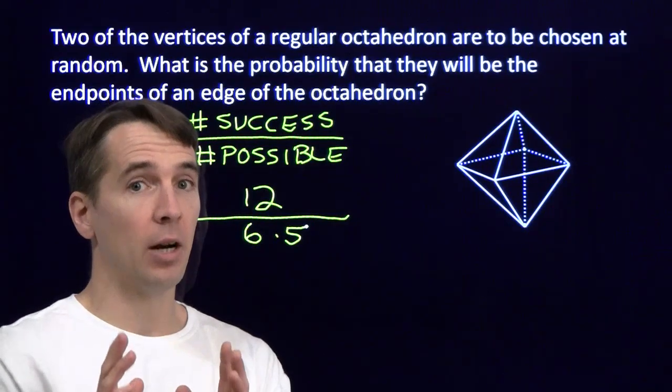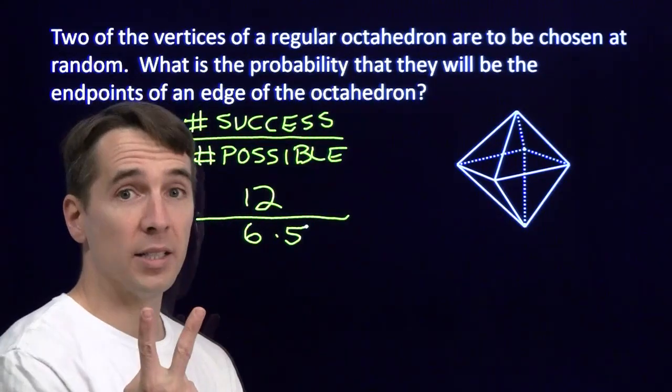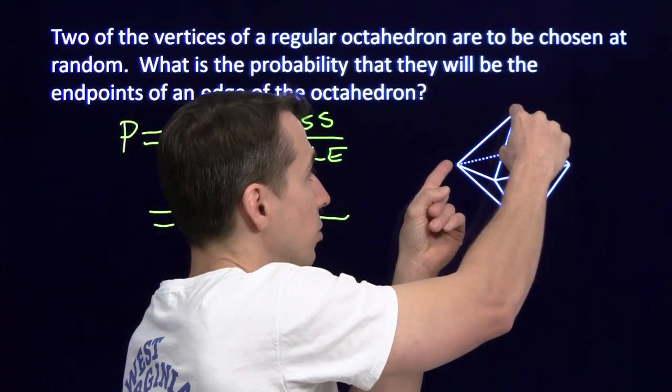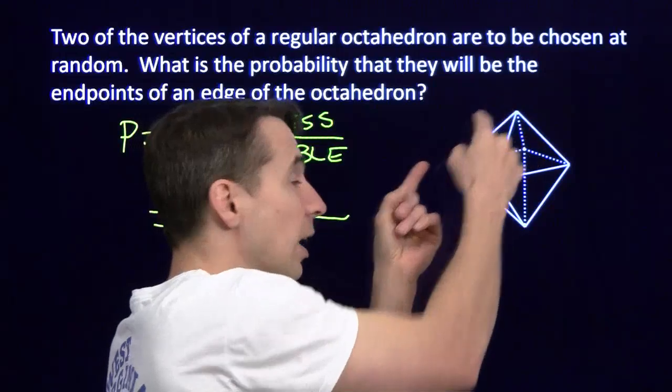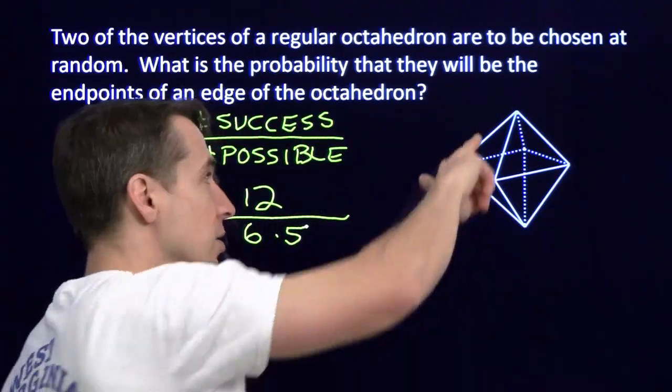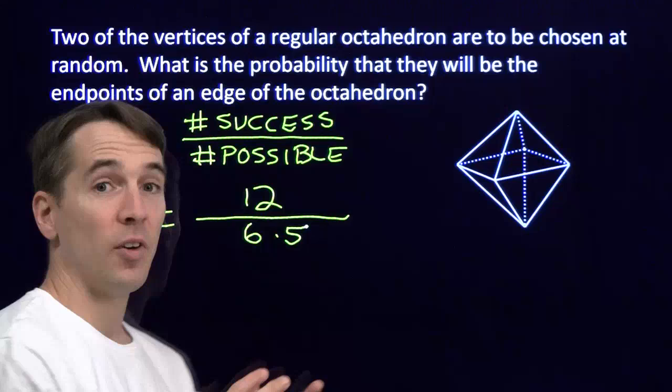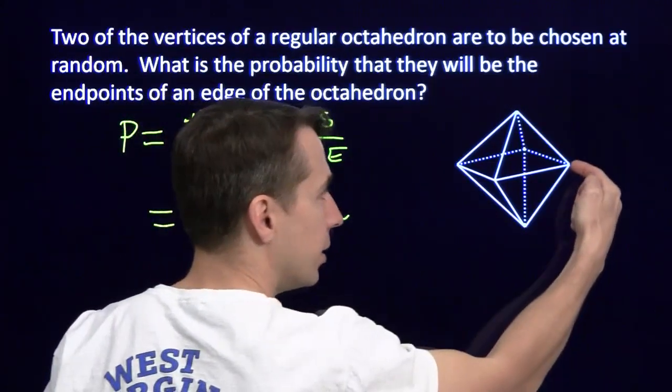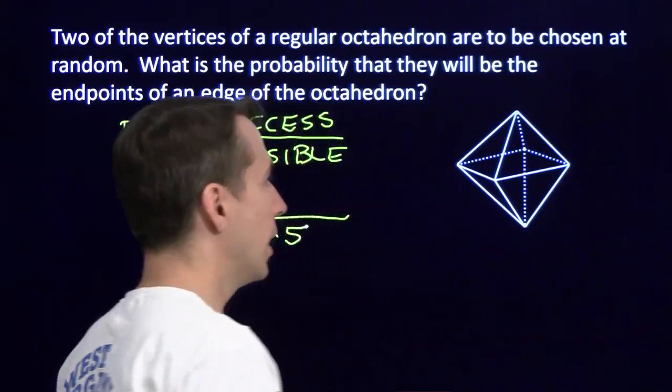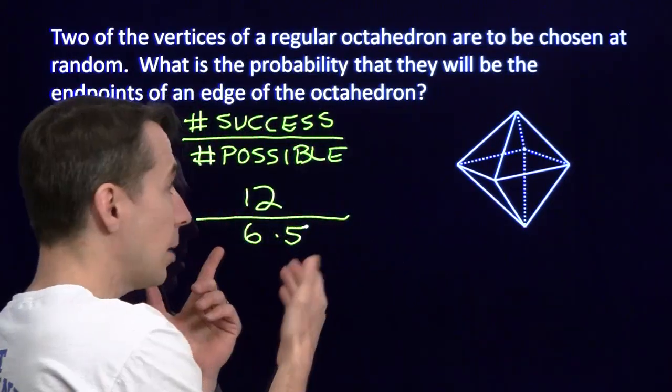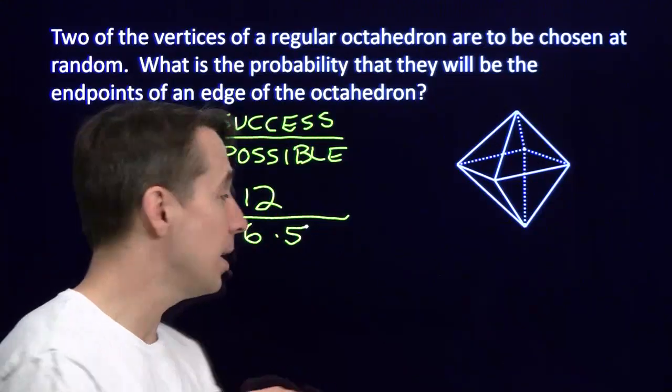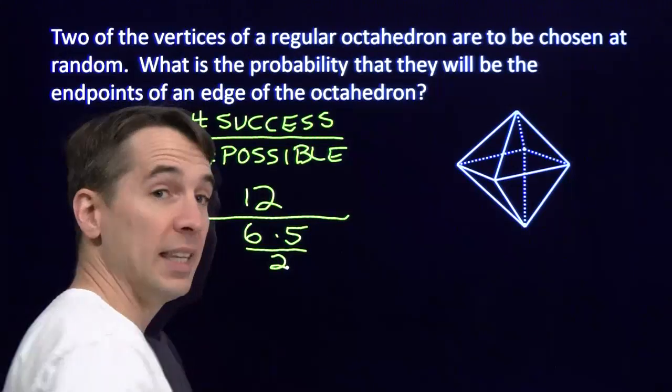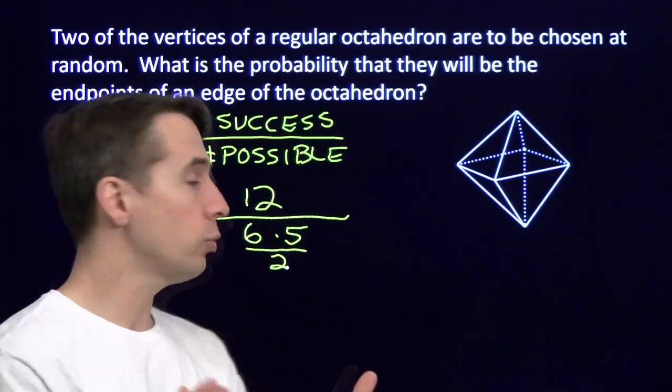But I have to be careful here. This is counting each pair of vertices twice. Now if I look back at the successes, I was counting each success once. If I choose these two vertices, I get this one edge. I'm only counting that once for the one way I can choose two vertices. This 6 times 5 counts each one twice. For example, I could choose this vertex and then this one, or I could choose this one and then this one. This 6 times 5 counts those as different. We need to count them as the same. So to account for that, we divide by two. And that makes us count each possibility once and only once.